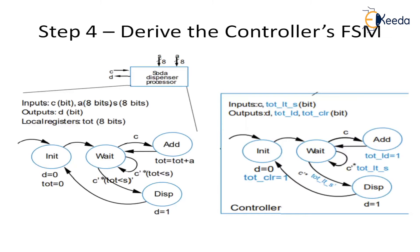The next step is to derive the controller's FSM. The high-level state machine captures the behavior of the soda dispenser machine. I have four states: initial state, wait state, add state, and dispense state. In the initial state, D equals zero (dispense is zero) and total equals zero — total being a local register.